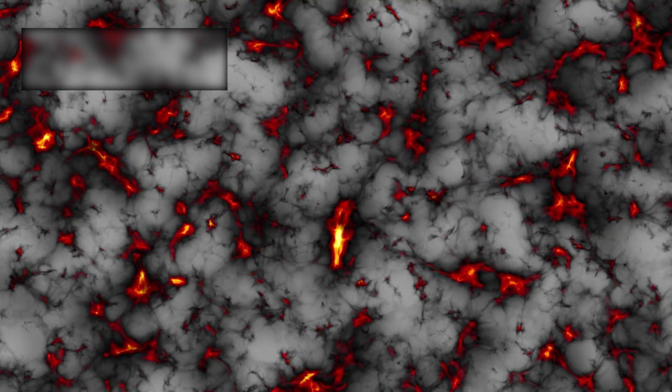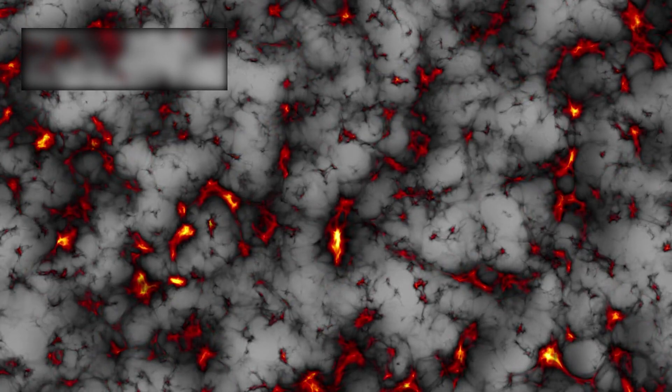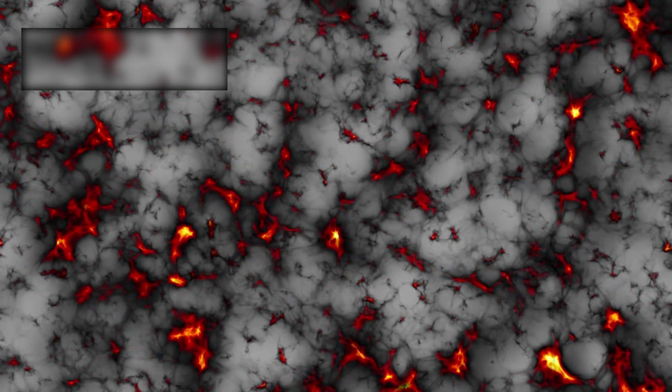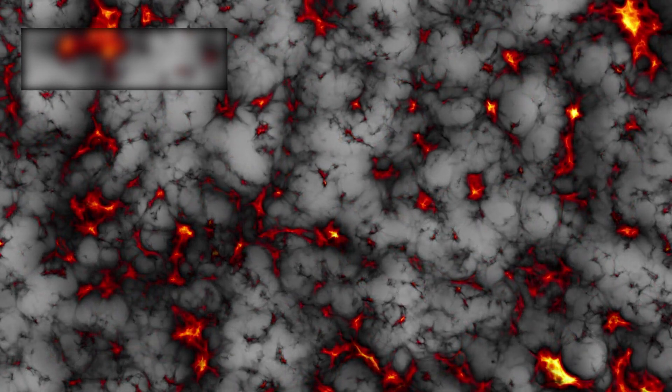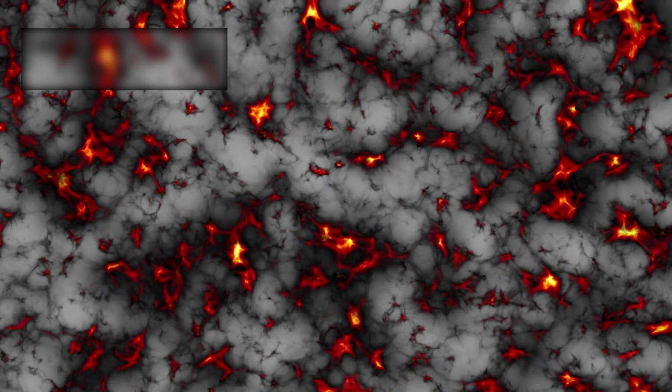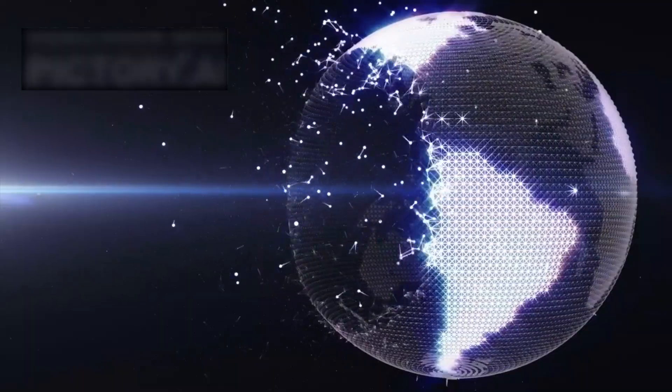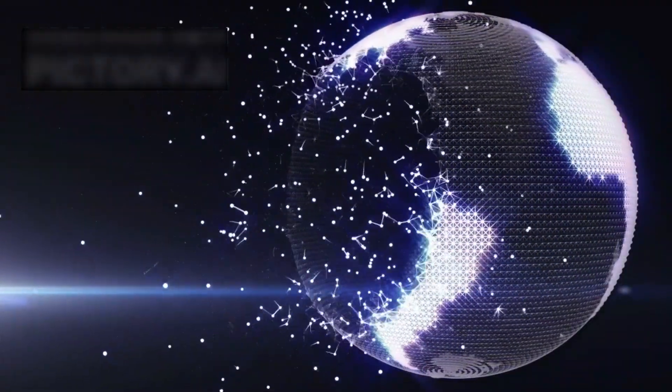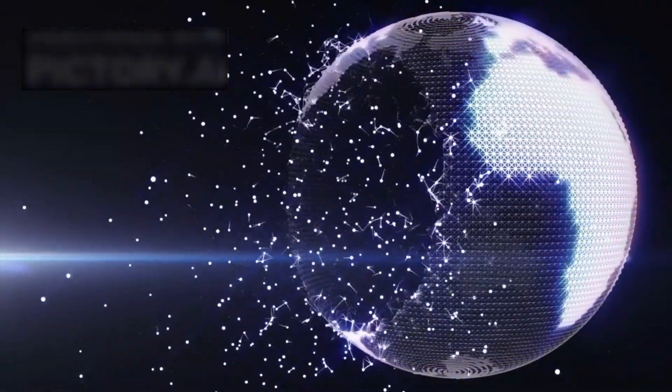Another, even darker possibility is the big rip. If dark energy continues to grow stronger over time, it could eventually overcome all forces, tearing apart galaxies, stars, planets, and finally, even the atoms that make up matter itself. In this vision of the future, the universe ends not in silence, but in violence, ripped apart by its own expansion.